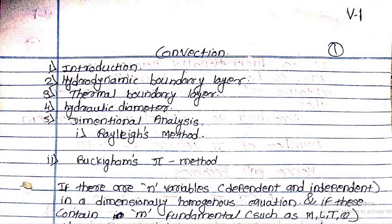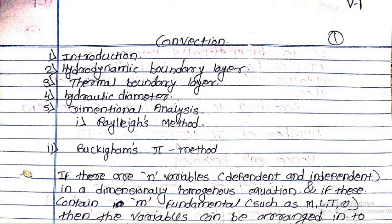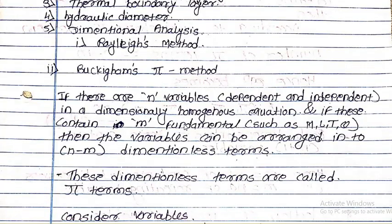Hello everybody, today we are going to learn the convection chapter. In that, we have already discussed the introductory part, then the hydrodynamic boundary layer, thermal boundary layer, hydraulic diameter, and dimensional analysis. In dimensional analysis we covered the significance and methods, including the Rayleigh's method and its drawbacks. Now we are going to learn the Buckingham Pi theorem.